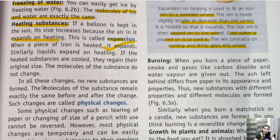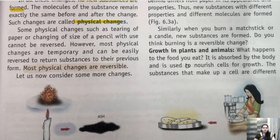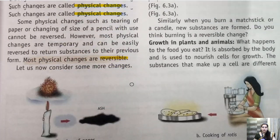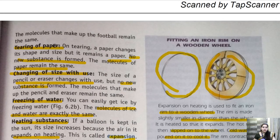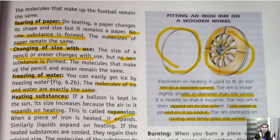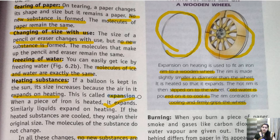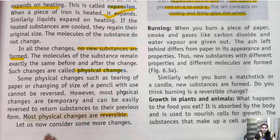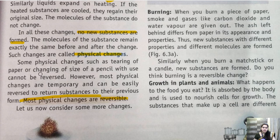All these things where no change in substance takes place are called physical changes. You should also note that most of the examples we have seen are reversible in nature. Kicking off football is reversible. Tearing of paper is not reversible — it is irreversible. Changing the size of pencil is also irreversible. Freezing is reversible. Expansion is reversible. So most physical changes are reversible, except for a few, like change in pencil size and tearing of paper.